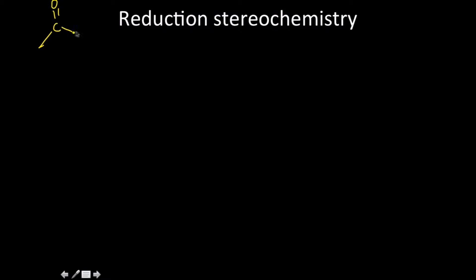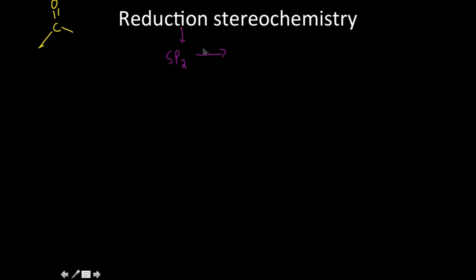Let's talk about carbonyl compound reduction stereochemistry. One of the things worth noting in these types of reactions is you're going from an sp2 molecule through some type of reduction reaction. What you're getting out of that is an sp3 hybridized molecule, so obviously there are going to be some steric consequences to deal with.